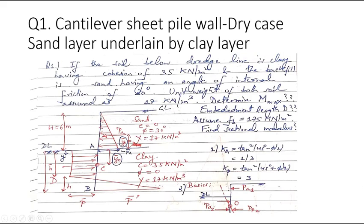This is the cantilever sheet pile wall. How does it derive its strength? This cantilever sheet pile wall derives its strength from the passive resistance of the soil below the dredge level. The soil above the dredge level is sand, the soil below the dredge level is clay. This cantilever sheet pile wall is used when the total depth is of moderate height — only when a smaller depth is present can we use the cantilever sheet pile wall.